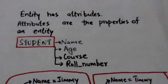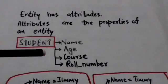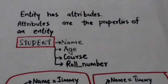Each entity has attributes. Attributes are the properties of an entity. For example, attributes of a student entity are name, age, roll number, and course. A particular entity has a value for each of its attributes.